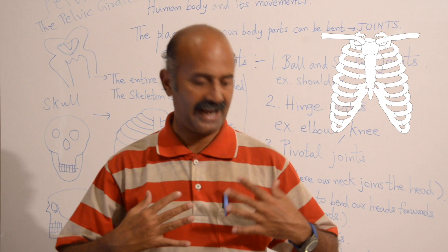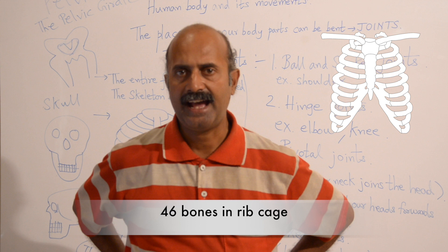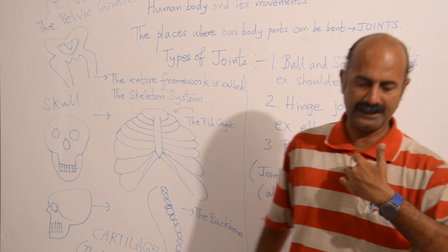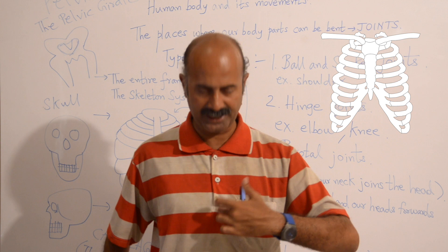Our human rib cage has 23 bones on the left side and 23 on the right side — totally 46 bones. They are supported by the breast bone, also known as the sternum. You can feel the breast bone from top to bottom; it is very strong, and all the ribs are connected to the sternum, also known as the breast bone.